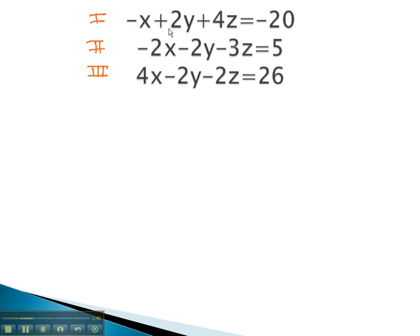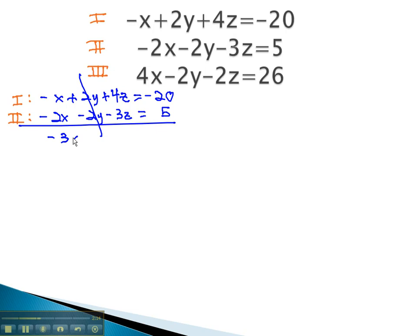You may notice that the y's have a positive 2y and negative 2y if we use equations 1 and 2. Equation 1 was negative x plus 2y plus 4z equals negative 20. Equation 2, negative 2x minus 2y minus 3z equals 5. With the y's eliminated, we now have negative 3x plus z equals negative 15. We've eliminated the y now once.